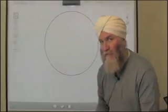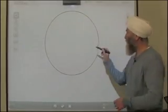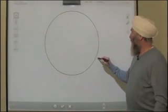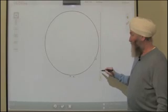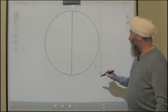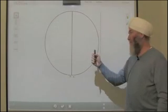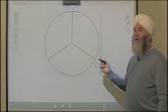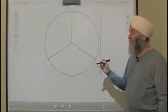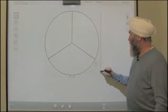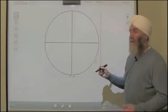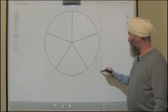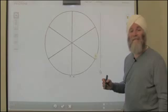Let's take a look at the model and see how it works. So here's a circle, kind of like the cookie, and we can divide it into equal parts. If we divide it into two equal parts, we call those halves. If we divide it into three equal parts, they're called thirds. Four equal parts — fourths. Here is fifths. And here we have sixths.